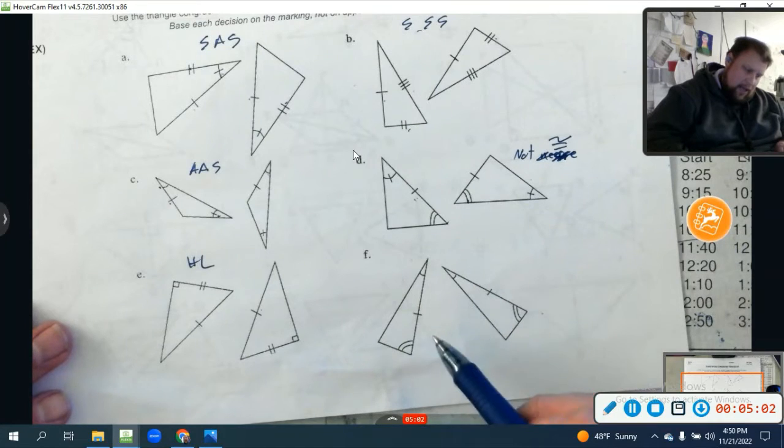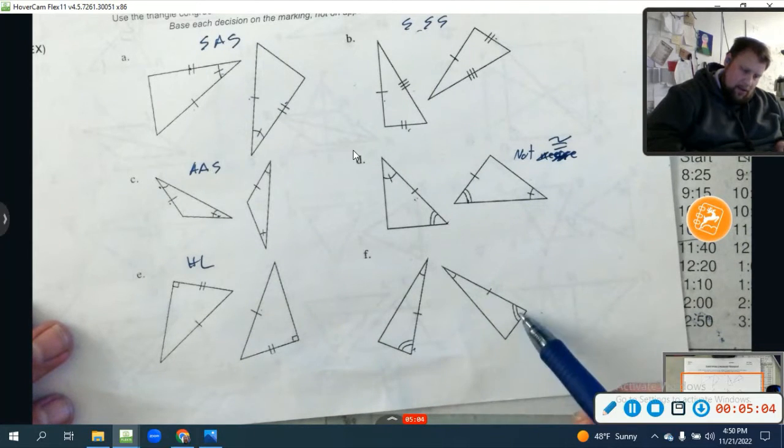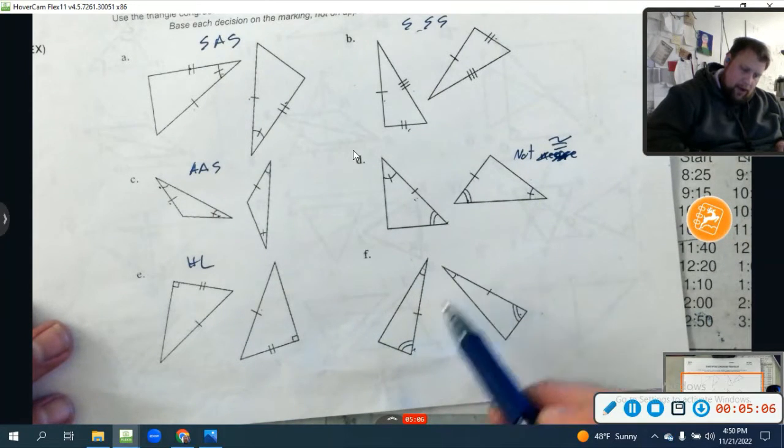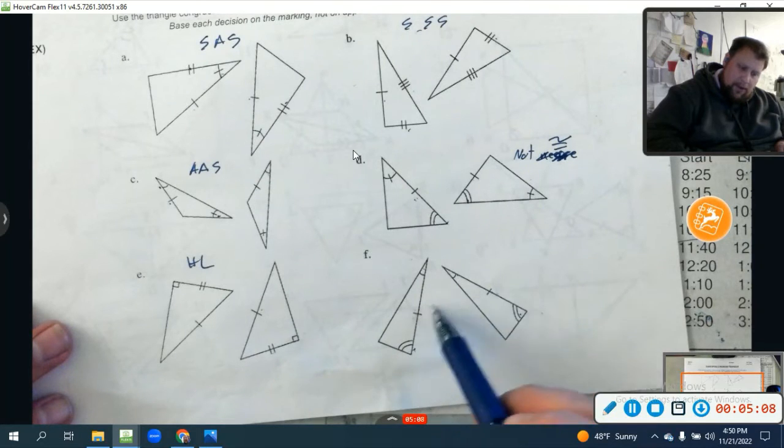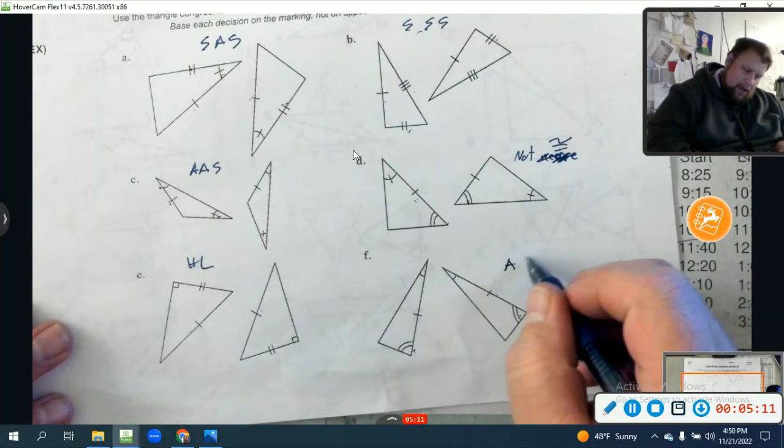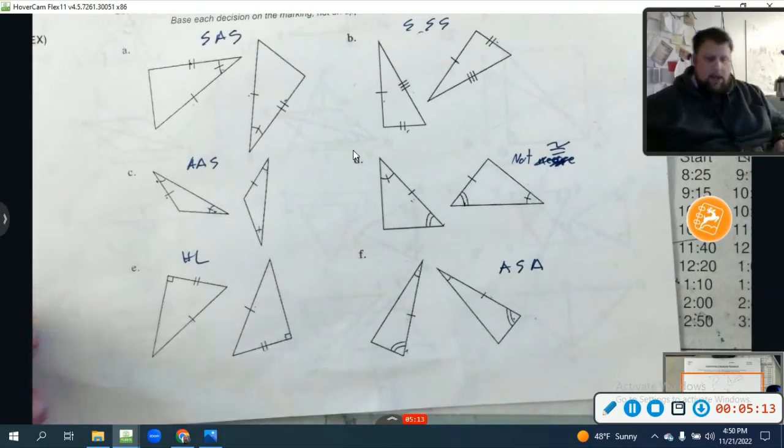And last right here, let's see. I have an angle, a congruent angle, another angle, a congruent angle, and the included side. Both sides are included, not like this one. So, this would be angle, side, angle. Boom.